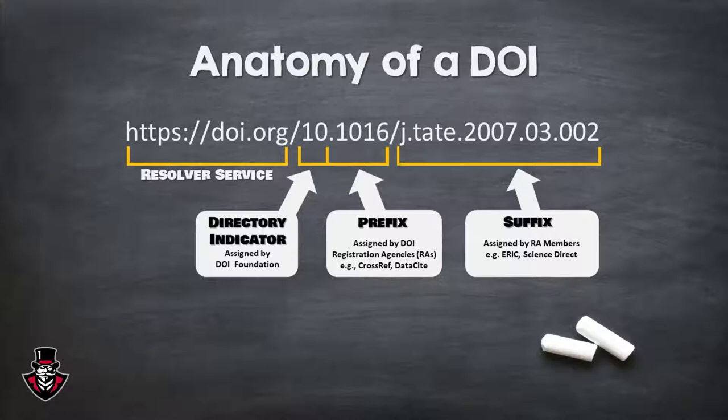All DOIs start with 10 and contain a prefix and suffix separated by a slash. Additionally, because they have only been around since the year 2000, most research tied with a DOI is current and contains research previously done on this specific academic topic.